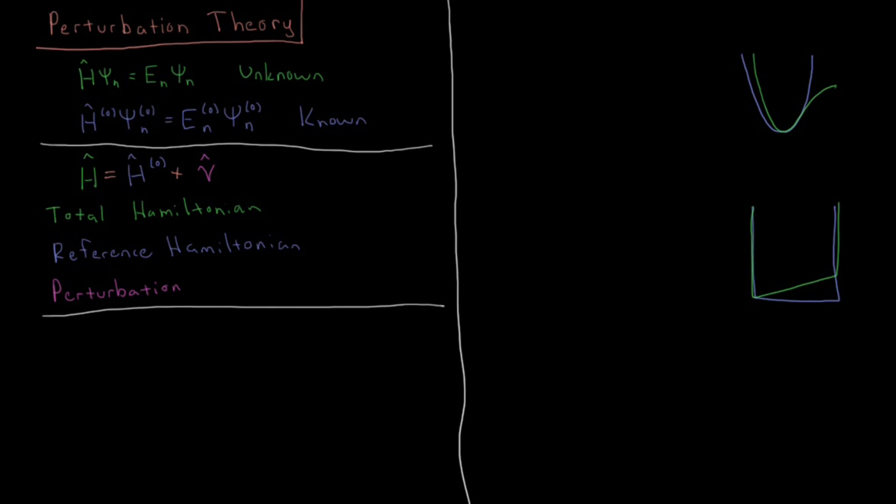Now we're going to look at another method for getting approximate solutions to the Schrodinger equation for systems which we cannot solve exactly. And this is called perturbation theory.